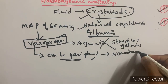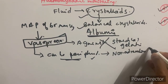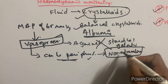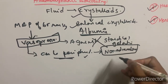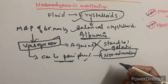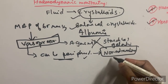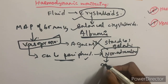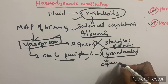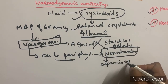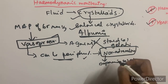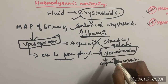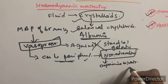Noradrenaline is the first-line vasopressor of choice. If noradrenaline is not available — for example, in a peripheral or resource-limited setting — dopamine or adrenaline can be used as first-line agents instead.